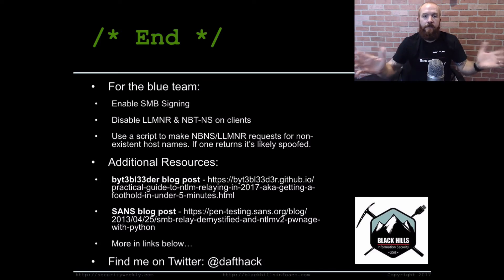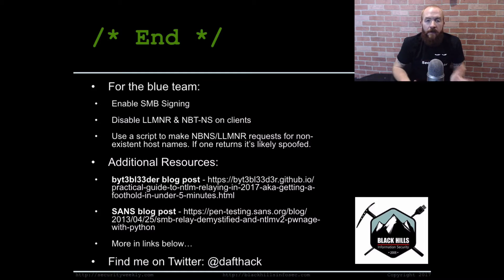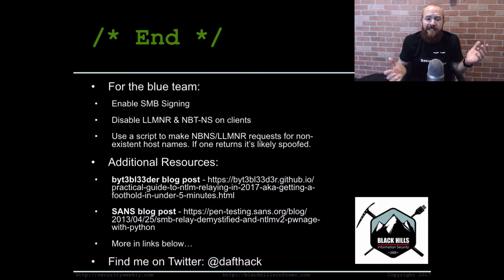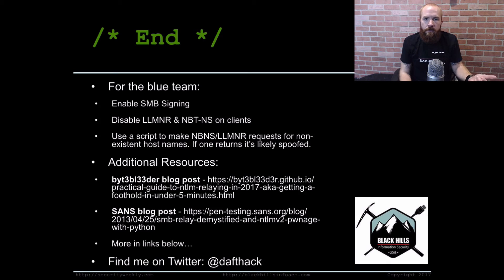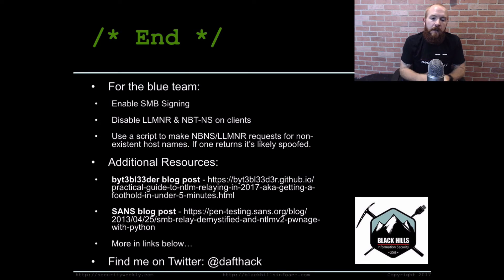That is it for this edition of Tradecraft Security Weekly. For the blue team, you're going to want to enable SMB signing on everything. There's really no reason not to besides potentially slowing down network file shares, but security comes first. Also, disabling LLMNR and NBNS, if possible — that might cause some issues depending on your network setup, so do some research before you start just enabling and disabling stuff. If you have hosts on your network that can't be resolved, technically DNS should be handling that for you, so LLMNR and NBNS on the local network probably aren't needed that much.